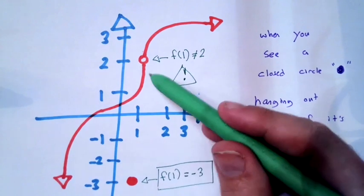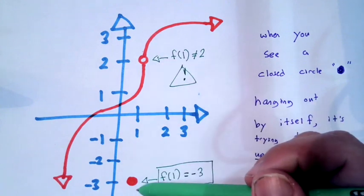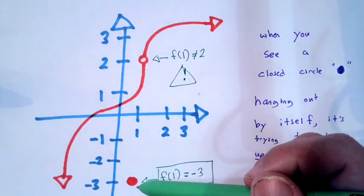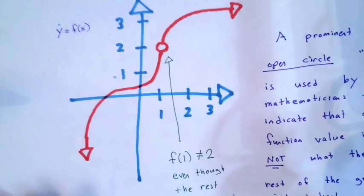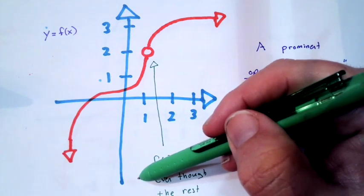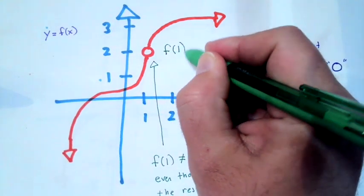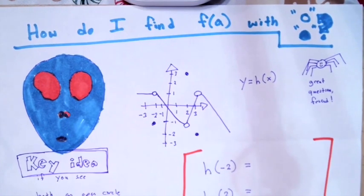This open circle, closed circle, the open circle is a warning saying don't look here. You look for a closed circle and the closed circle actually gives you the function value. If you do not see a closed circle, like on this graph, I don't see a closed circle anywhere, then the function is undefined at that value. Just to repeat, because this idea is super important.